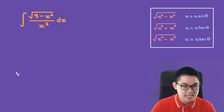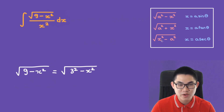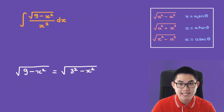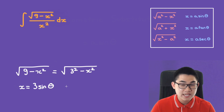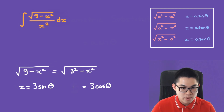Right away, we see that we have 9 minus x², which is the same as 3² minus x². So which form do we have? It's going to be the first one, and a is equal to 3. So our formula will be x equals 3 times sine of theta. We also need to find the derivative: dx/dθ is 3 times cosine of theta, so dx equals 3 cosine dθ.